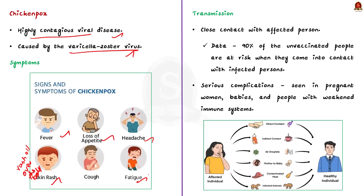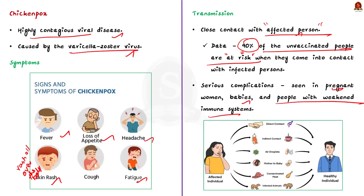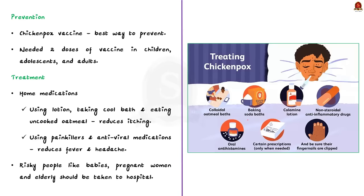The chickenpox virus spreads mainly through close contact with an infected person. Studies show that if one person has chickenpox, up to 90% of unvaccinated people close to that person will become infected. Chickenpox is not a serious concern to a healthy person, but can cause serious complications in pregnant women, babies and people with weakened immune systems. Vaccination against chickenpox is the best prevention — it is very safe and effective. Two doses in children, adolescents and adults will effectively prevent chickenpox.